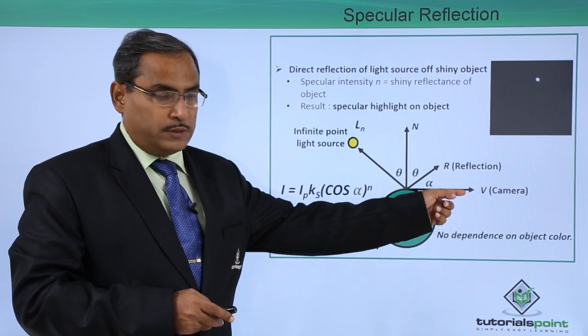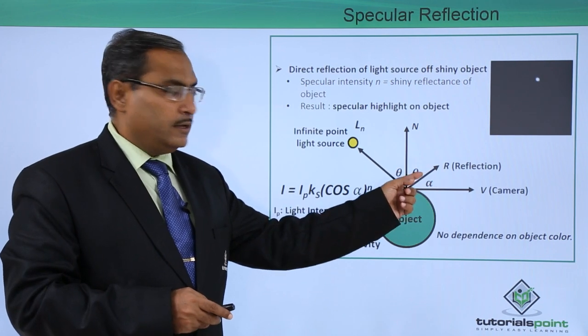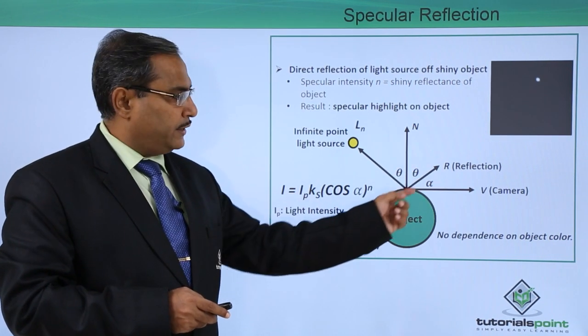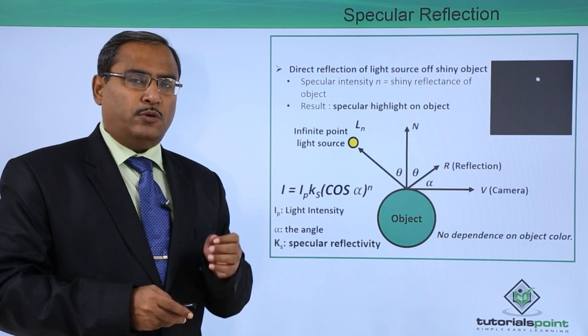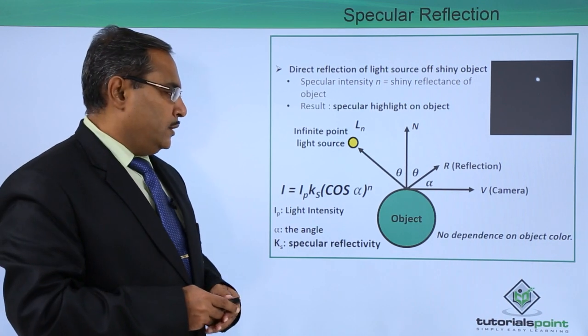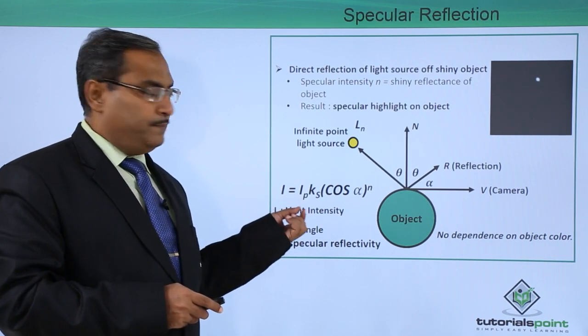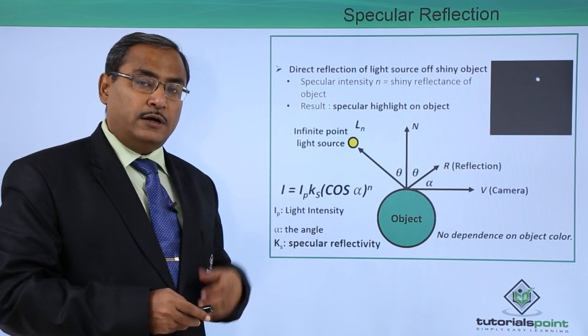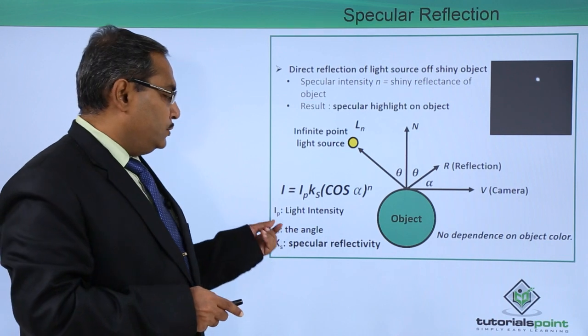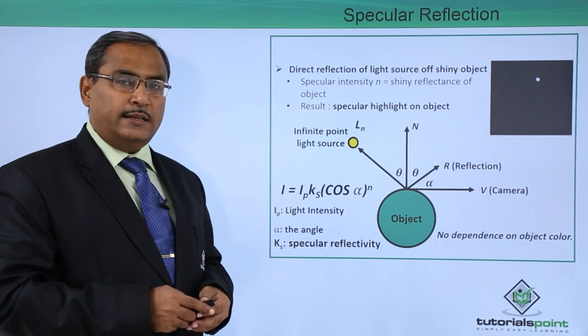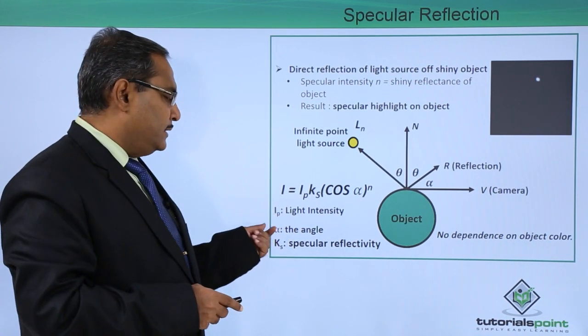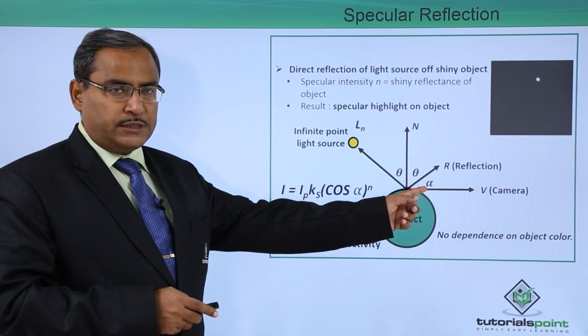If you consider this direction towards the camera and this reflection light, there is a light which is getting reflected, the angle between them we have considered it as alpha. Now this is the respective equation. Intensity is equal to I_p k_s cos of alpha to the power of n. Here we are having I_p that is the light intensity and this alpha is the angle which we have discussed earlier.